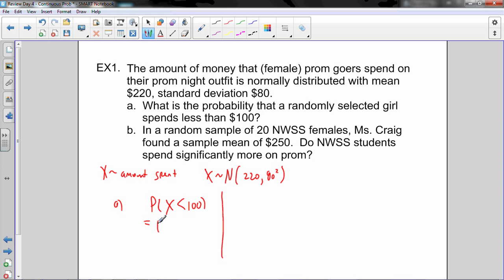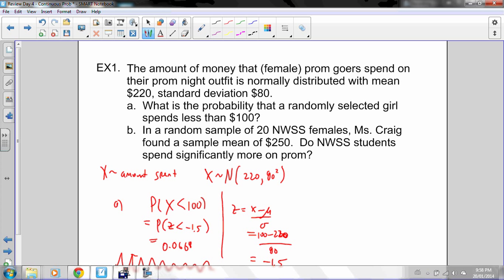How we did this was we standardized it, right? We calculated the Z score. And I don't use standard error in this one because I don't have a sample mean. 100 was my X, my mean was 220, and my standard deviation was 80. That gives me a Z score of negative 1.5. Chart lookup now. It's already a less than, I don't have to do a 1 minus, and I get about that much, about 7%.